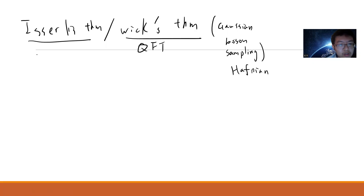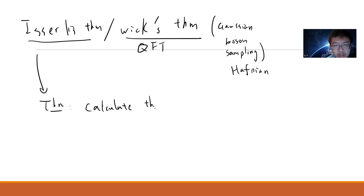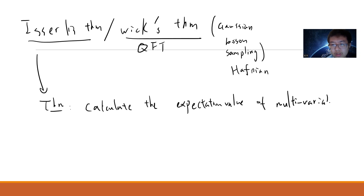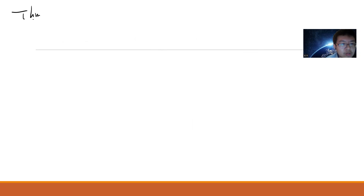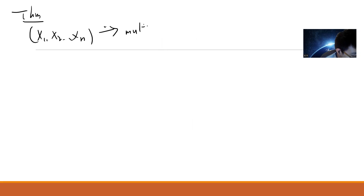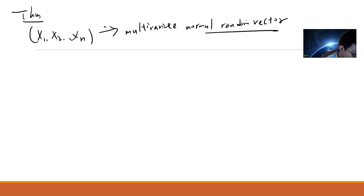So this is the theorem. It's simply a theorem to calculate the expectation value of a multivariate normal random vector — the expectation value under the multivariable normal distribution. The theorem says the following: if you have x1, x2, up to xn, and this is a multivariate normal random vector...